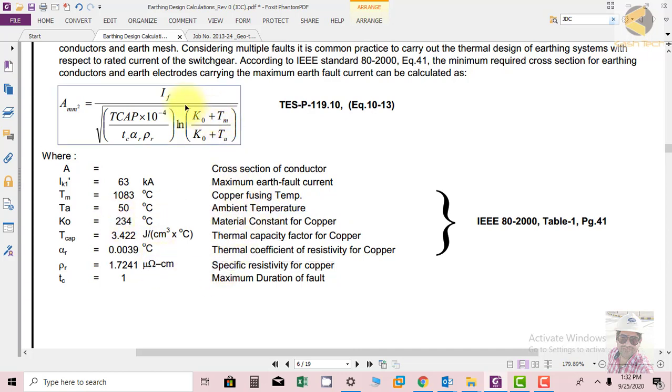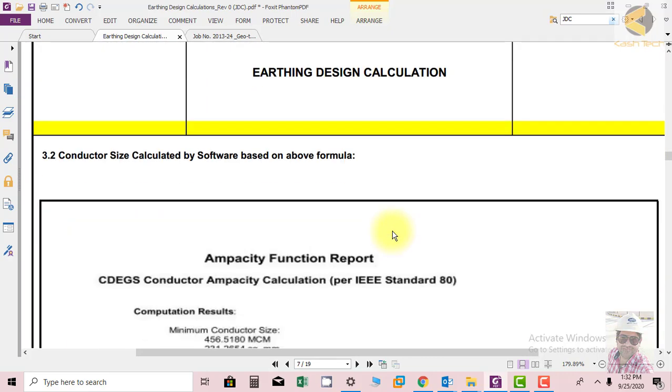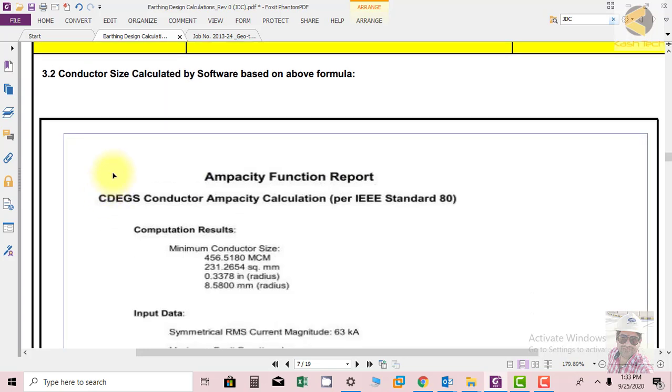You have to put this equation in the calculation also. All these parameter values are with us. The ambient value is also coming from the standard by the utility. We have put all these values and then we can calculate the cross section area. This table is also taken from IEEE 80 2000 page 41. This formula is very famous.